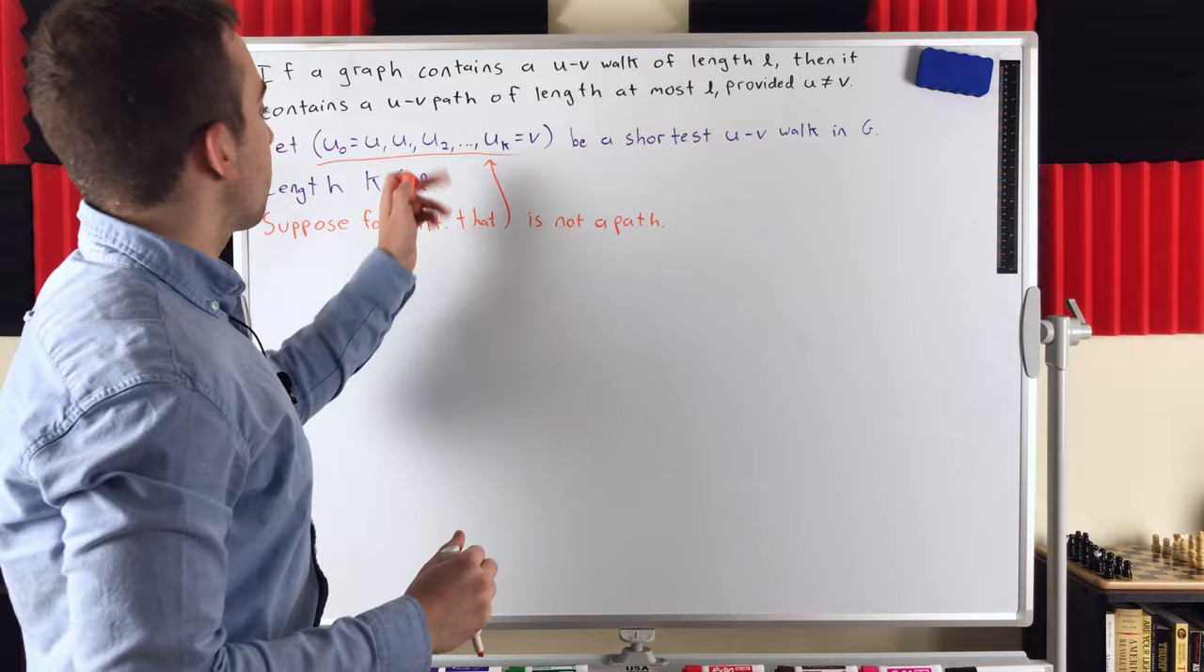And then we proceed by contradiction. So suppose for the sake of contradiction, that this walk is not a path. So we suppose for the sake of contradiction, that this shortest UV walk is not a path. That means it must repeat some vertices. There must be some duplicate vertices in this walk. So let's write that down.